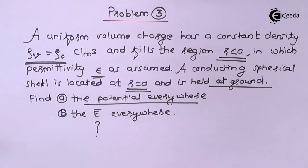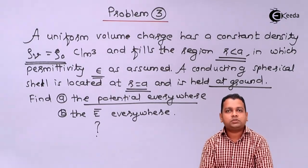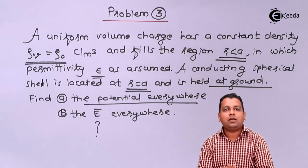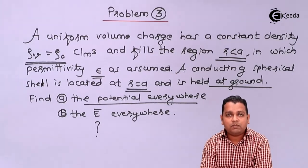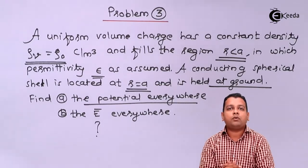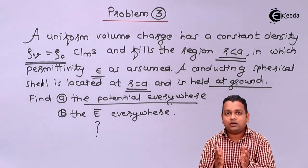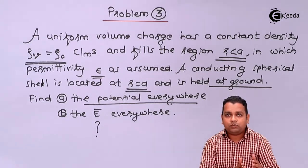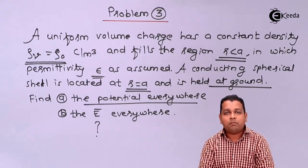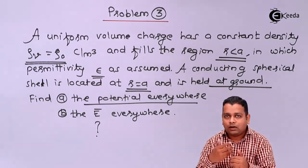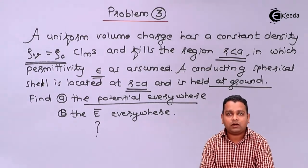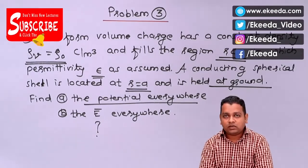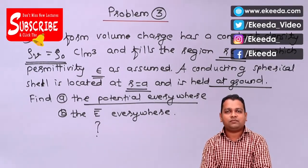With this problem, we are finished with chapter number 6, Capacitors. I hope you have understood all the concepts from parallel plate capacitor to Poisson's and Laplace equations. In the subsequent lecture, we are going to start a new chapter titled Steady Magnetic Fields, which is the second part of our subject, Electromagnetic Field Theory. Later on we will see the togetherness of electric field and magnetic field in the form of electromagnetic waves. For more information, you can subscribe to the Ikeda channel.